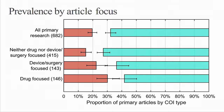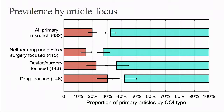Similarly, we see a pattern when we break the prevalence down by the focus of the article. Disclosed conflicts of interest sit around 19% for primary research, but as we look at different foci, it increases for devices and surgical-focused articles, and is around 30% for primary research articles focused on drugs.